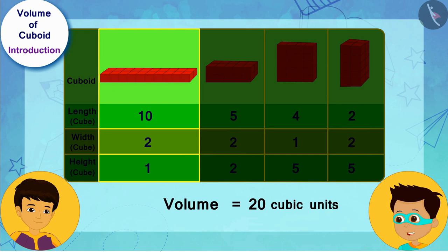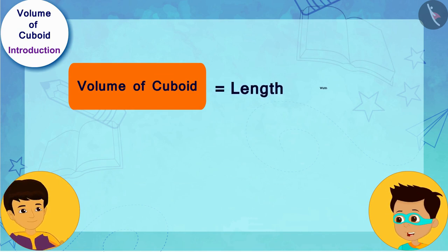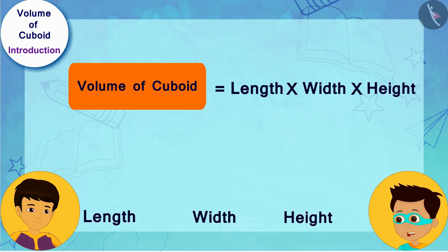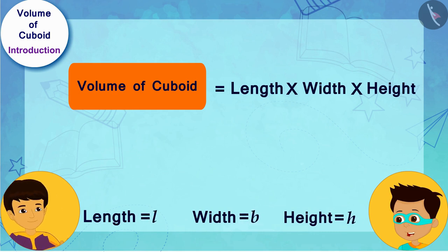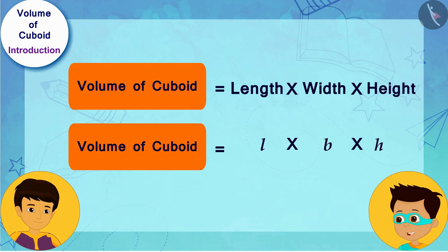And if we look closely, we will find that the volume of each cuboid box is equal to the product of its length, width, and height. If we write the length, width, and height of the cuboid as L, B, and H respectively, we get the formula L times B times H as the volume of any cuboid object.